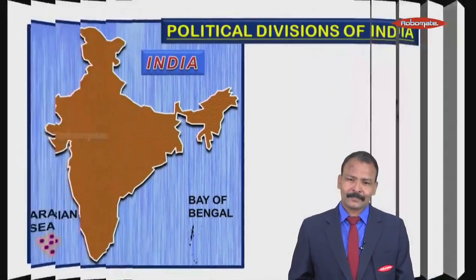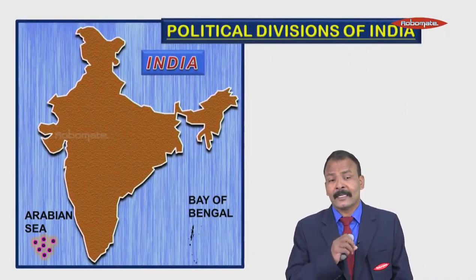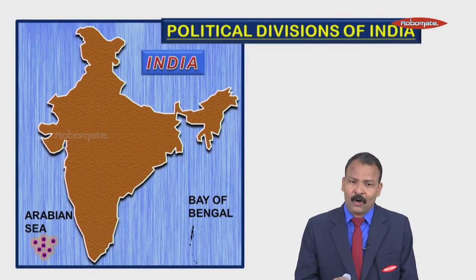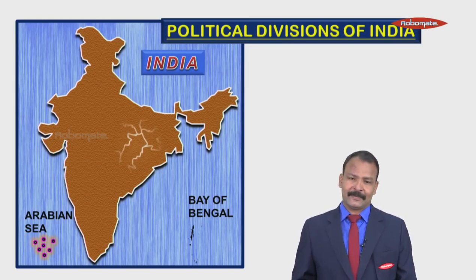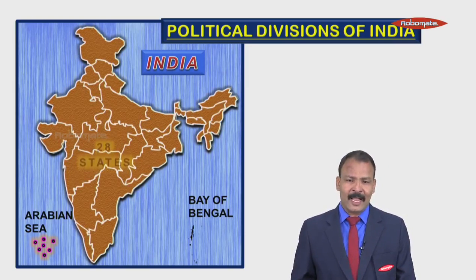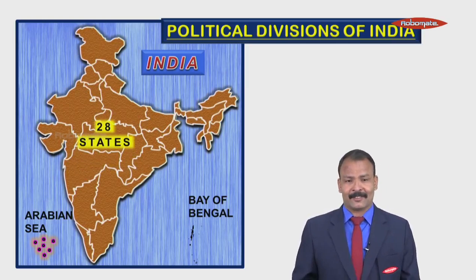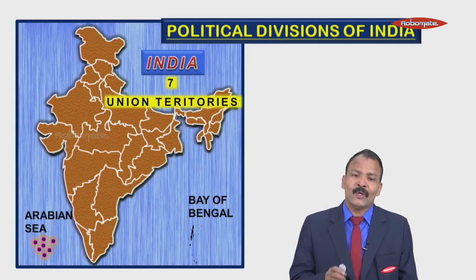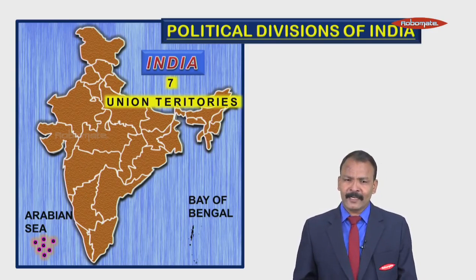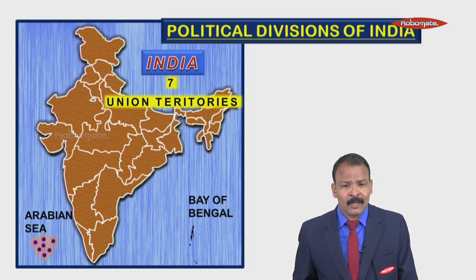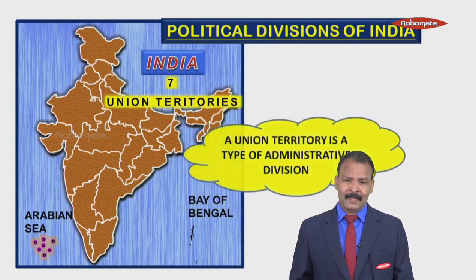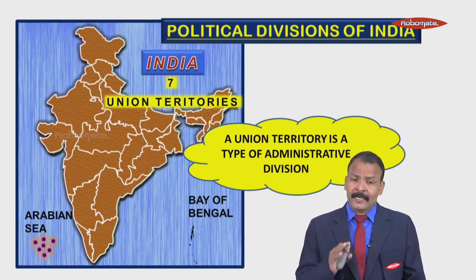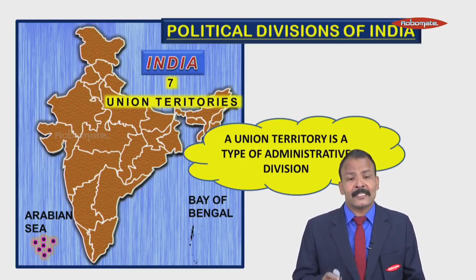Now, the political divisions of the country — these are required for administration. India has 28 states and seven union territories. Union territories are much smaller than states; a union territory is a type of administrative division but does not get the status of a state.